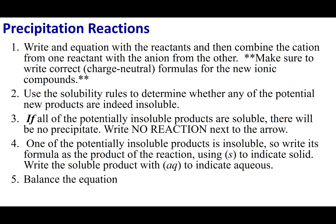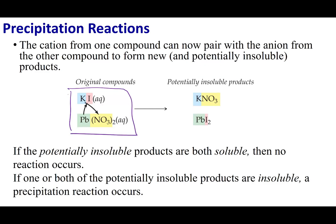The first thing you're going to do is the transposition or double replacement — switch partners. When you make the possible products, you've got to make an ionic formula that is going to be charge neutral. This is the one time you're allowed to change subscripts because you are predicting products. Let's look at this metathesis reaction.